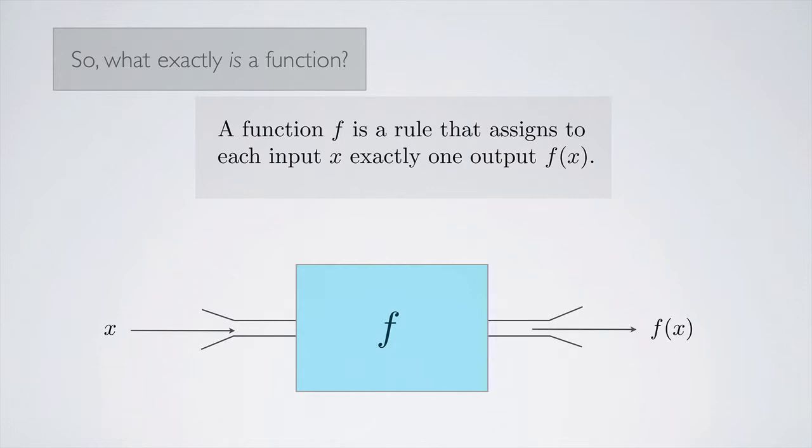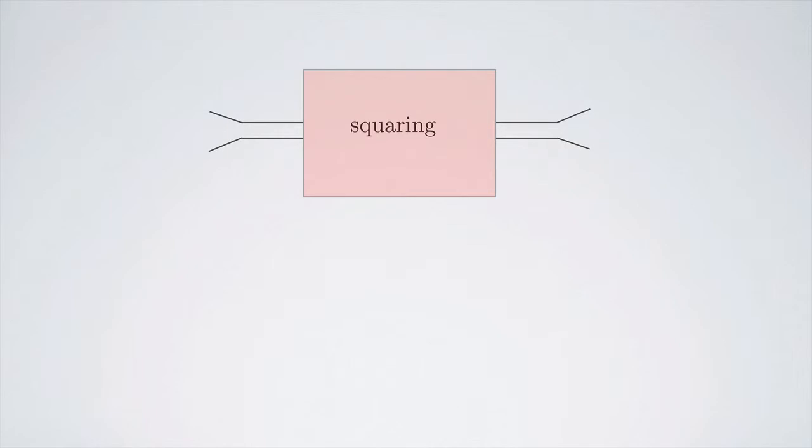So, for example, suppose we have a squaring machine. You put in 2, you get out 4. Makes sense. The actual formula for this function would be f of x equals x squared.